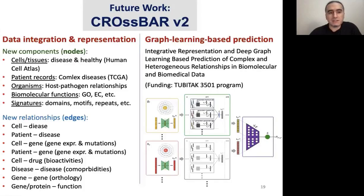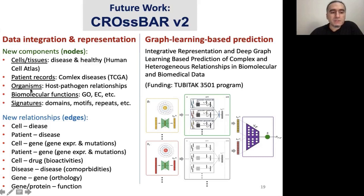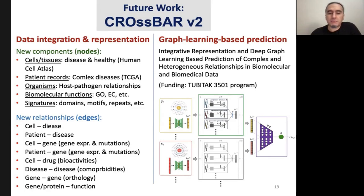At the end of this project, I want to mention the future work on CrossBar. We have started working on CrossBar version two. In terms of new types of data to be integrated and represented, we want to include cells and tissues from diseased and healthy individuals, patient records, organisms in terms of host-pathogen relationships, and biomolecular functions in terms of ontologies, as well as new types of relationships as edges. We started a new project entitled 'Integrative Representation and Deep Graph Learning-Based Prediction of Complex and Heterogeneous Relationships in Biomolecular and Biomedical Data,' in which we are constructing the renewed version two knowledge graphs and using them to predict indirect relations between different types of entities using graph learning.